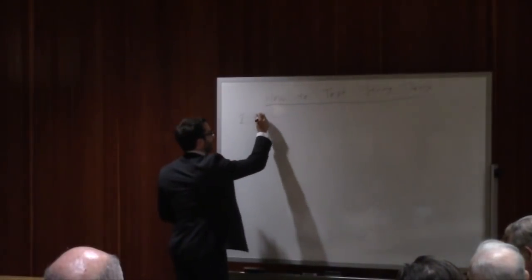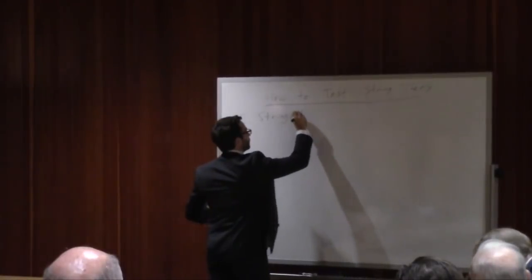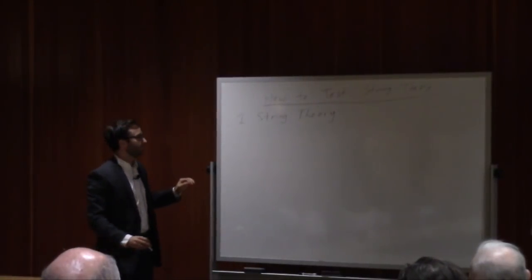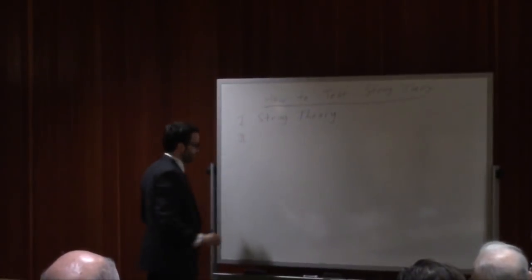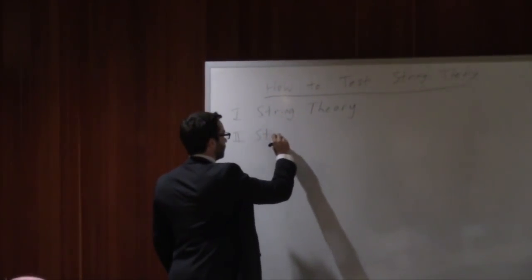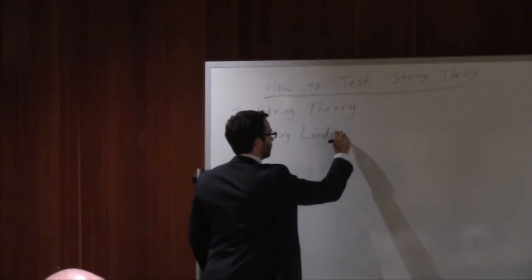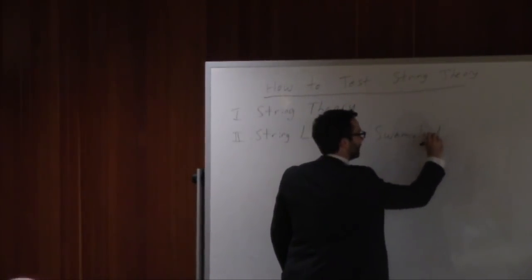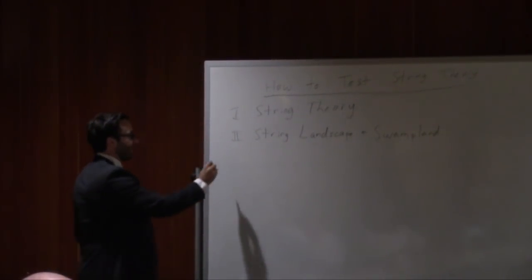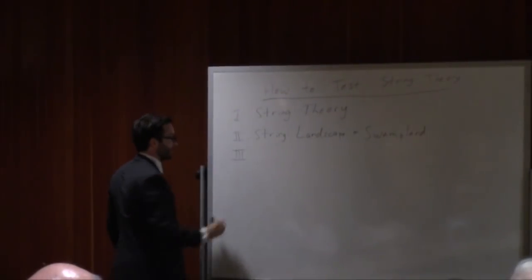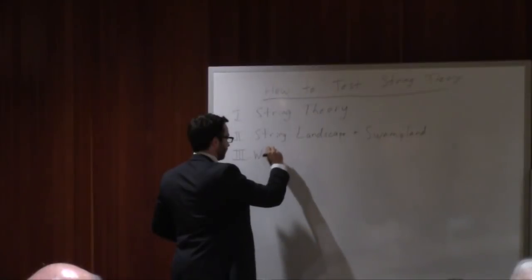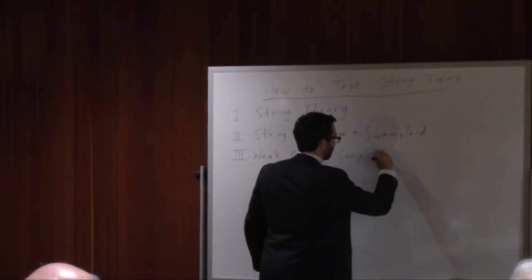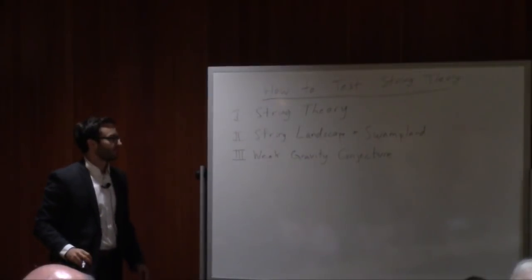So the first thing I'm going to do is introduce string theory. Then I'm going to talk a little bit about the string landscape and the swampland — I will define those terms when I get there. And this is going to lead me into something called the weak gravity conjecture. So let's start with string theory.